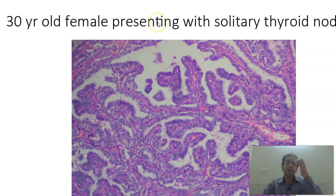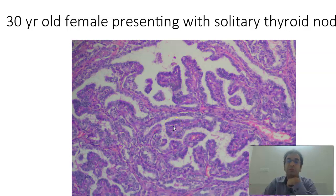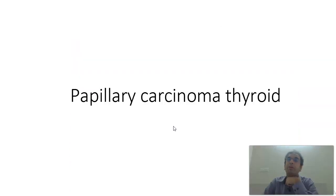Next, a 30-year-old female with a solitary thyroid nodule. What you find here is papillary configuration, Orphan Annie eye nuclei which are the optically clear nuclei, and fibrovascular cores — papillary finger-like projections are very obvious. The nuclei have Orphan Annie eye nuclei. These are the points to identify papillary carcinoma of the thyroid. It is very common in females and the first presentation can be an enlarged lymph node in the neck, called lateral aberrant thyroid.